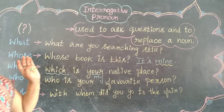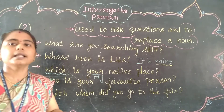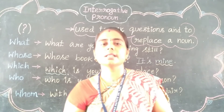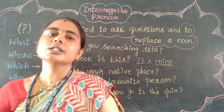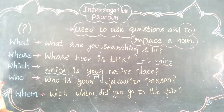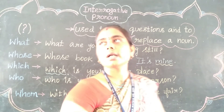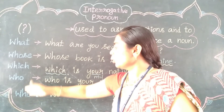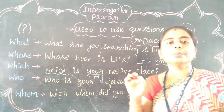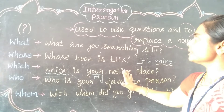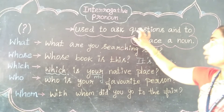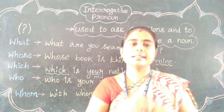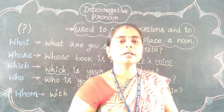Interrogative pronouns are used to raise questions and raise queries in front of others — they need to be answered. This is used to raise questions in all situations. According to the situation, we can use the question words. So the five interrogative pronouns are: What, Whose, Which, Who, Whom. These are used to ask questions, raise queries, and to replace nouns. That's it, students. Thank you for being a part of this session.